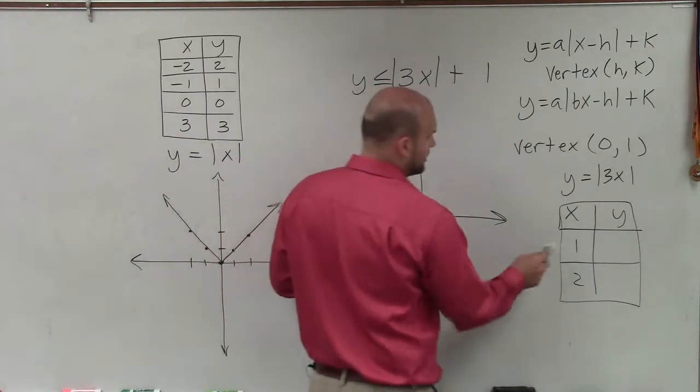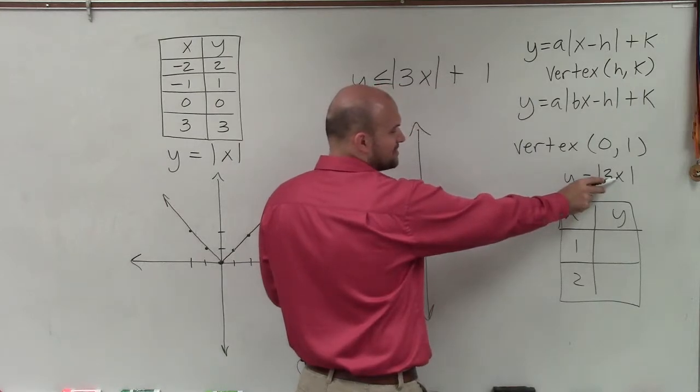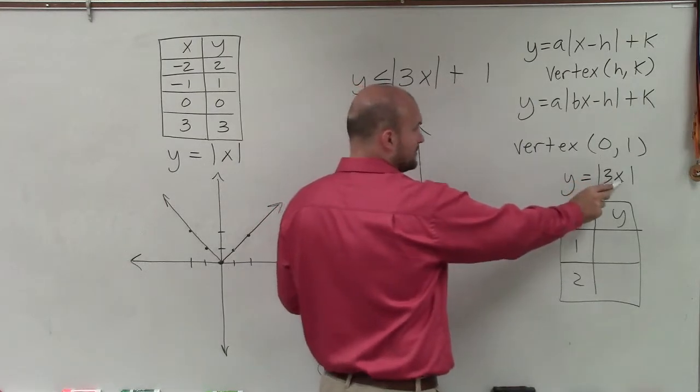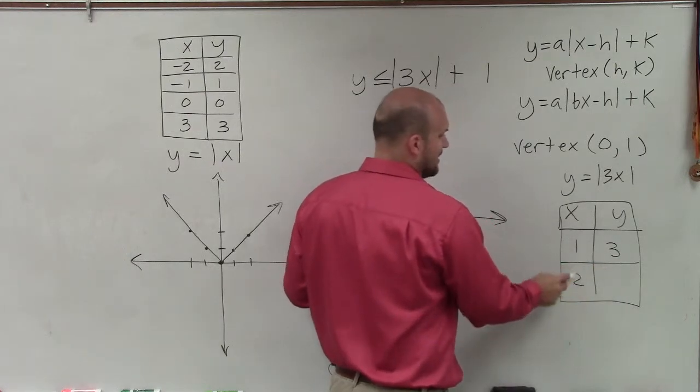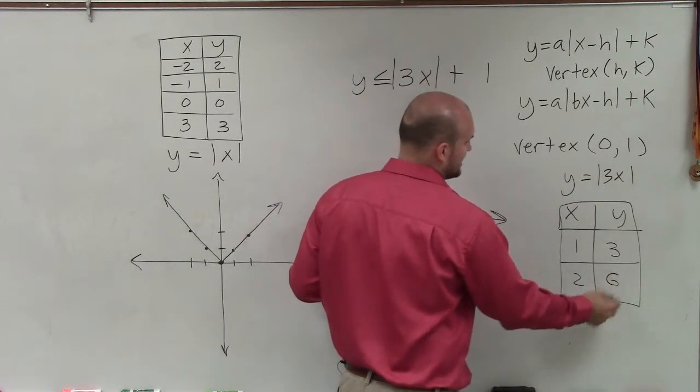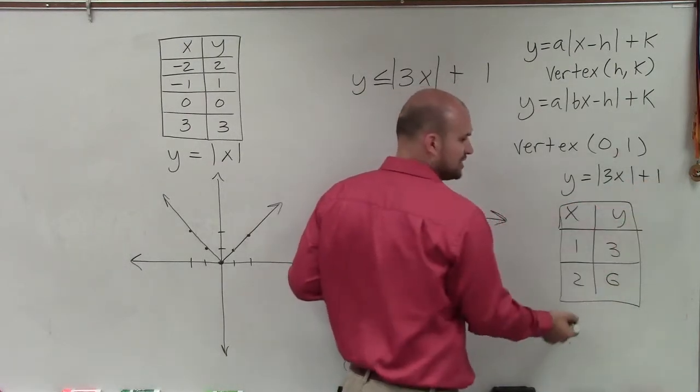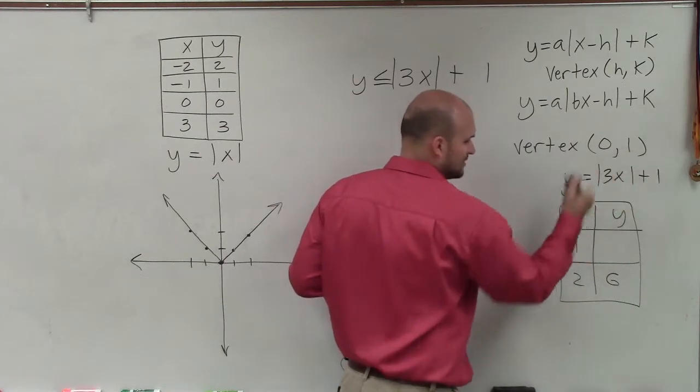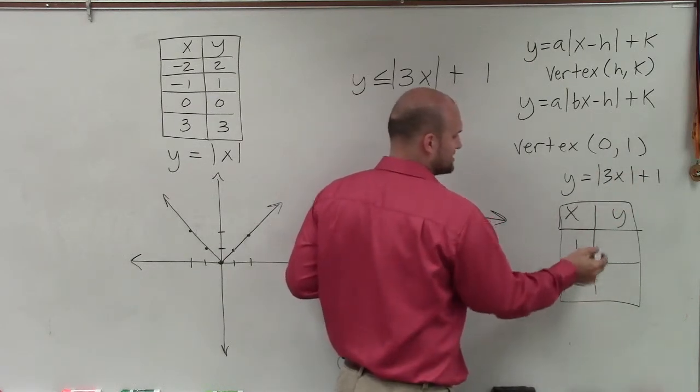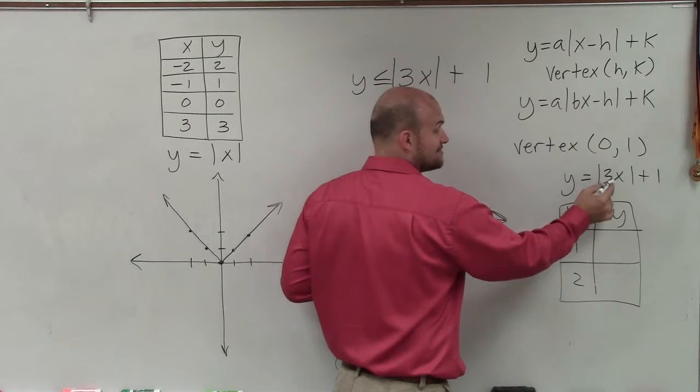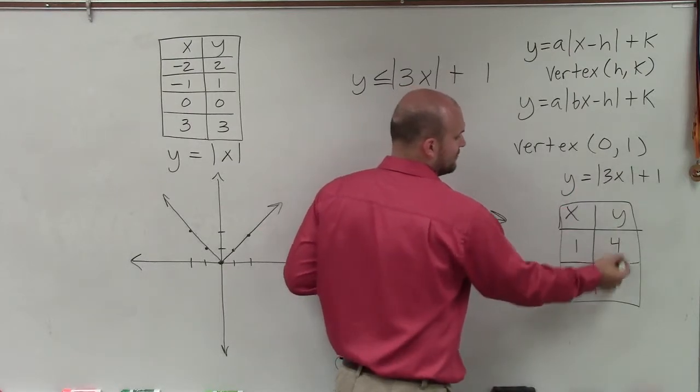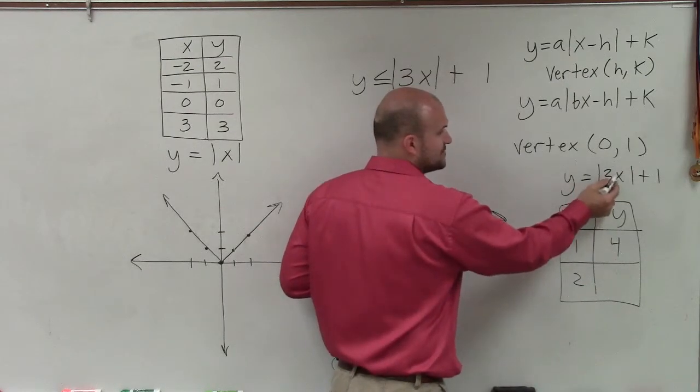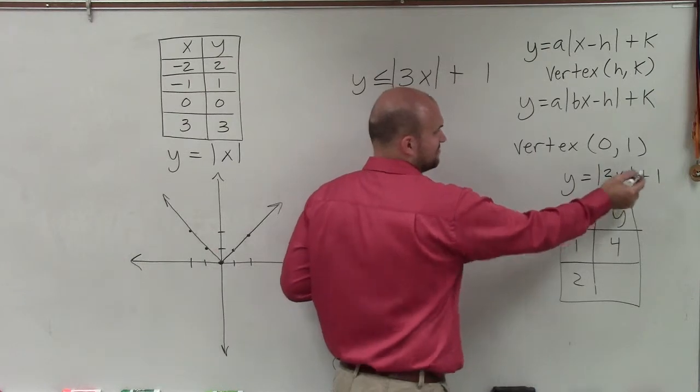So I pick 1 and pick 2. Now, if I plug in 1 for 3x, 3 times 1 is going to be 3. And then 2 times 3 would be 6. Now, obviously, the real equation is plus 1, right? So 1 times 3 is 3. Absolute value of 3 is 3. Plus 1 is 4. And then 2, 3 times 2 is 6. Absolute value of 6 is 6. Plus 1 is 7.